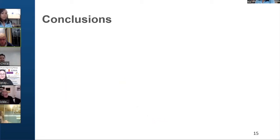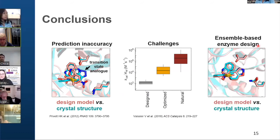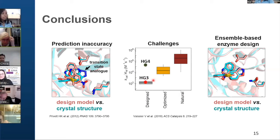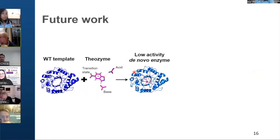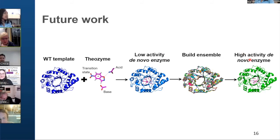To conclude, inaccurate prediction contributes to low catalytic efficiency of designed enzymes, emphasizing the need for a robust methodology. Here we have used ensemble-based enzyme design to improve the prediction of the HG4 structure. Our results suggest that we could design a highly active enzyme without the need to rely on directed evolution. In future work, we are planning to use this protocol in an iterative approach to design new reactions, where a low-activity de novo enzyme will be crystallized, an ensemble built from it, and then an artificial enzyme with high activity will be created.